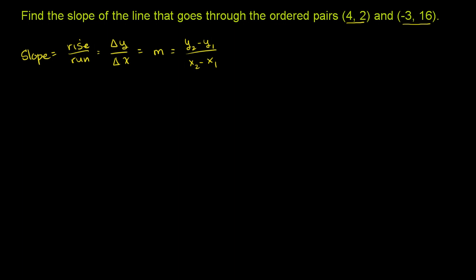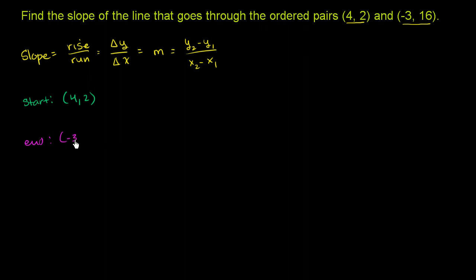We could do it both ways — we could start at this point and go to that point, or start at that point and go to this point. Let's do it both ways. So let's say that our starting point is 4 comma 2, and our endpoint is negative 3 comma 16.